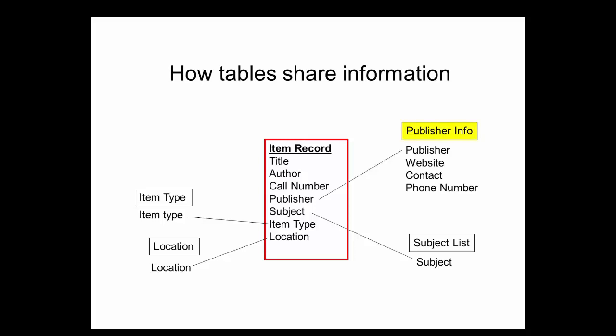The publisher info table has more fields: publisher, contact, website, and phone number. It has a field in common with the central table — the publisher field. And as in the six degrees of separation game, because each table has a link to some other table in the database, all tables in this database are considered related and can communicate with one another, whether they have a direct link to each other or not. The item type and location tables don't share a field in common with each other; however, each has a field in common with the central table, so these two tables are linked and can share information. All tables become related or interconnected, which enables a process called querying.